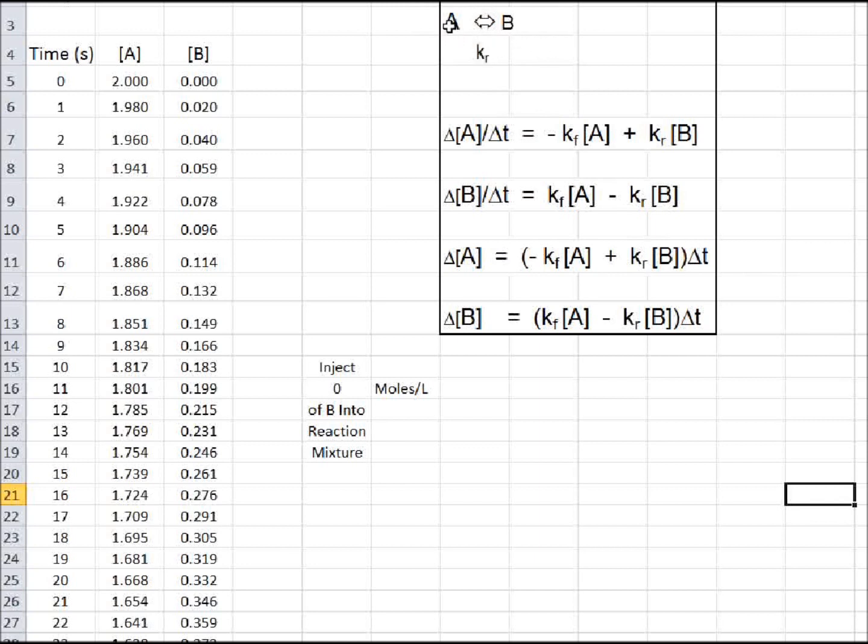The rate constant for A going to B we'll call Kf, and that for B going to A we'll call Kr.